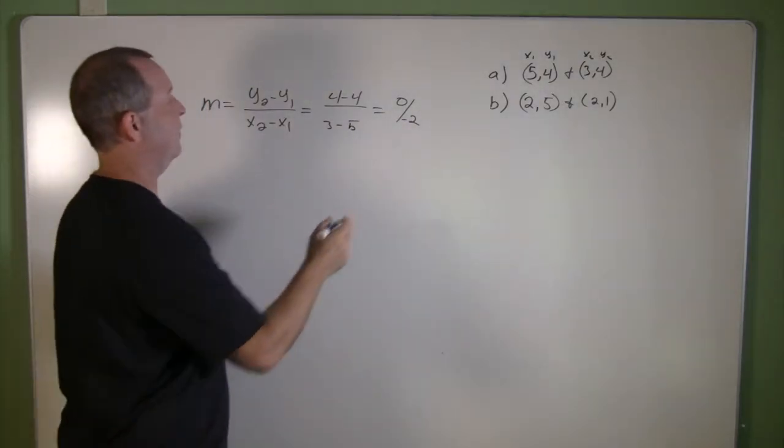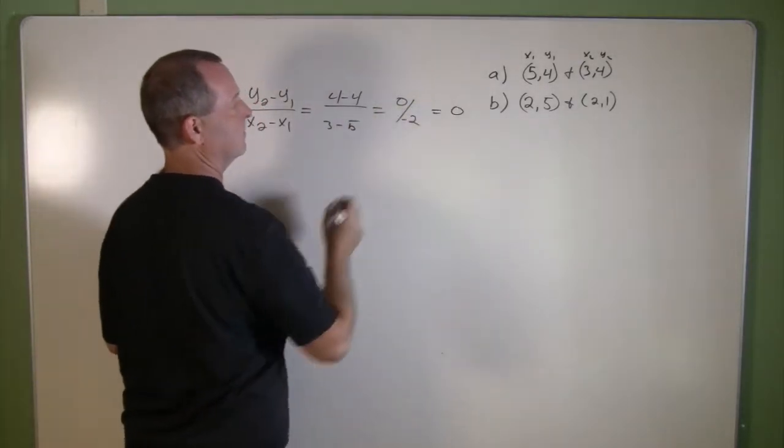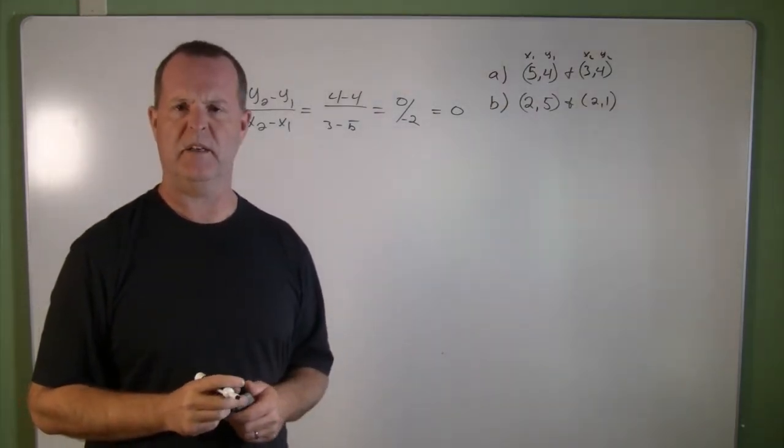So I have the slope on this first one of 0. What does a 0 slope mean?